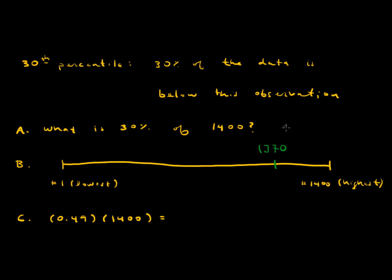You can always figure out a percentile by doing the number of people below this observation divided by the total. So the number of people below would be 1,370, and the total, again, is 1,400.